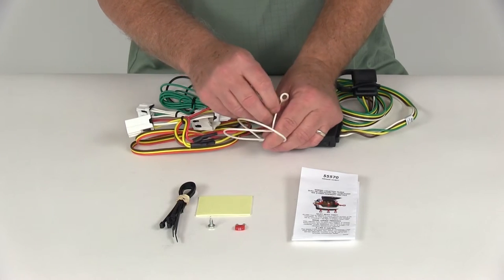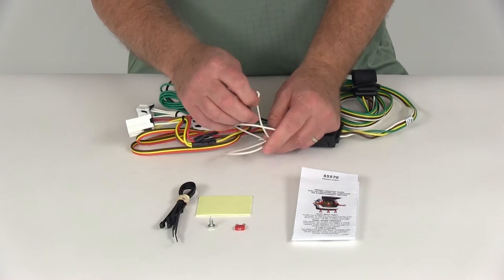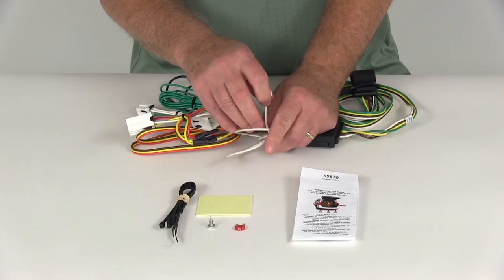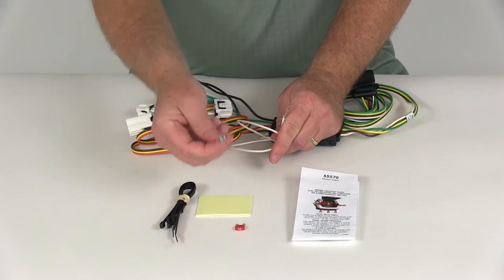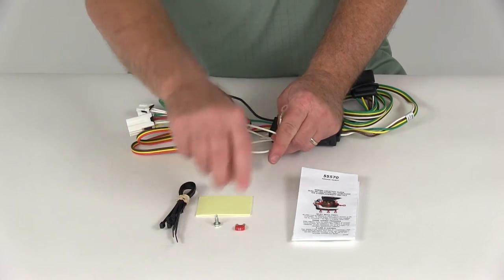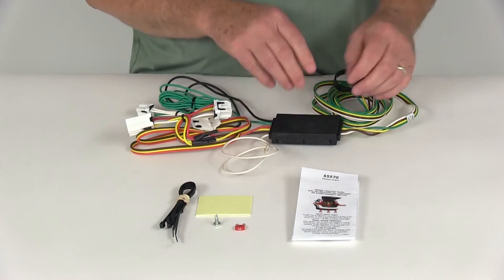And then your last wire is this white wire with the eyelet on it. This is for your ground, what you'll want to do is find a good clean ground. If you need to make one they do include a grounding screw that you can drill a hole, put your screw in and ground it to get your good clean ground.